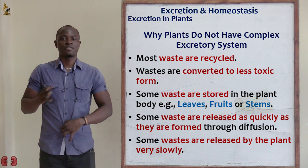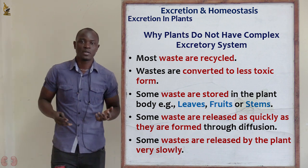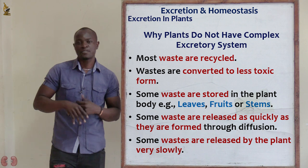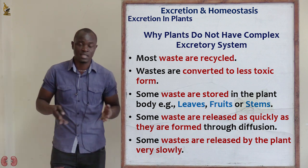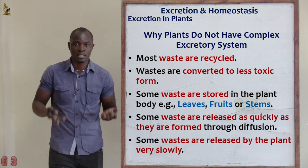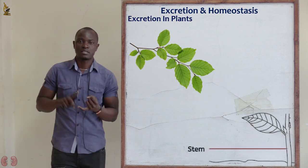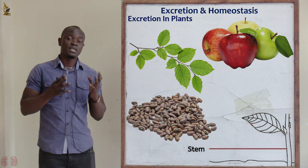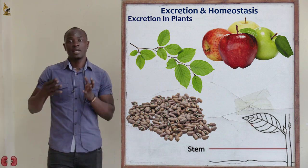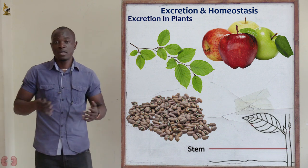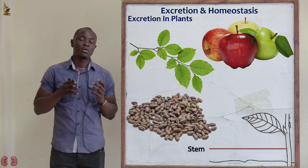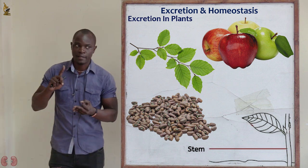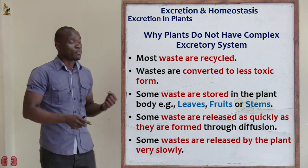The second reason why plants don't have a complex excretory system is that some waste products are converted to less toxic substances. Once converted, these less toxic substances are stored in different organs of the plant — in leaves, stems, fruits, and seeds.